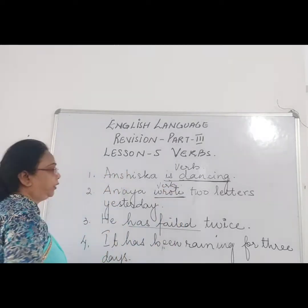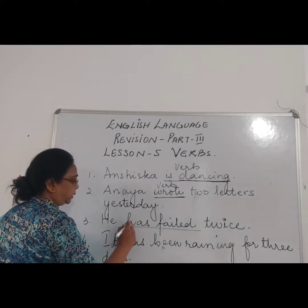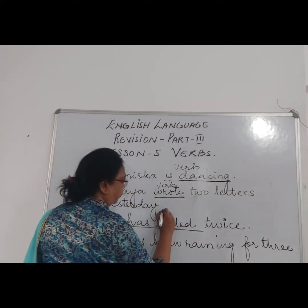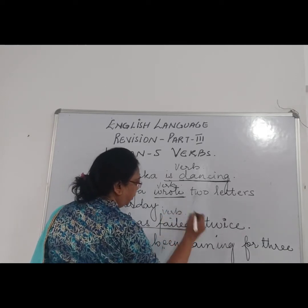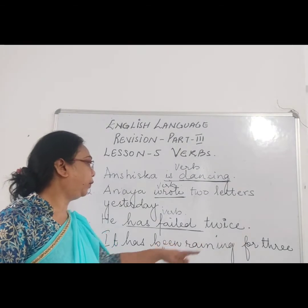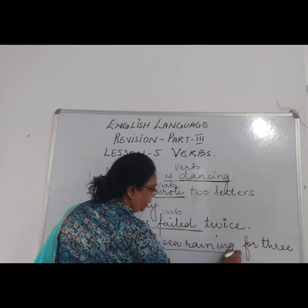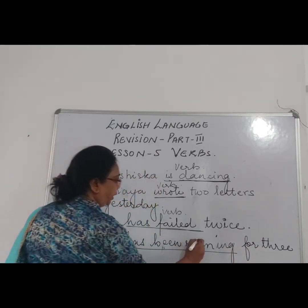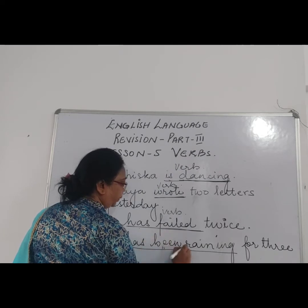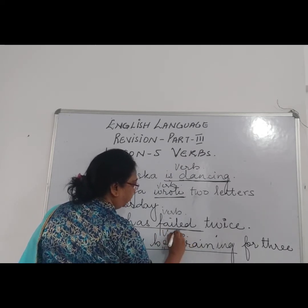He has failed twice. Now what action is here? He failed — so 'has failed' is the verb. Now, it has been raining for three days. So 'has been raining' is the verb.